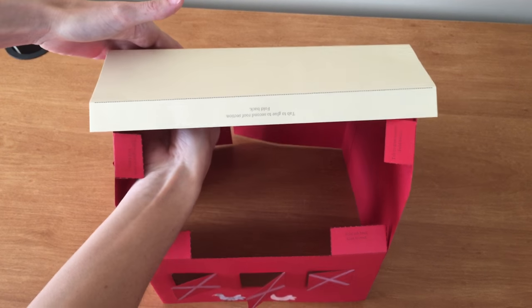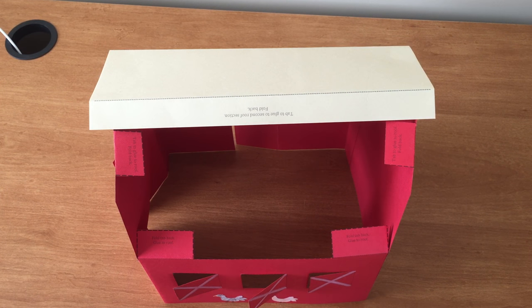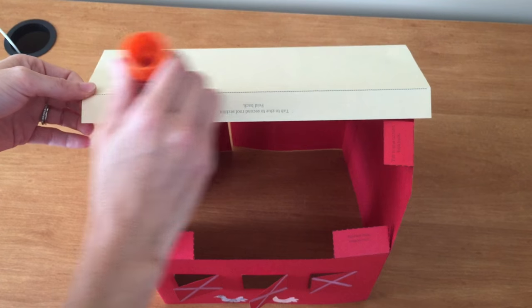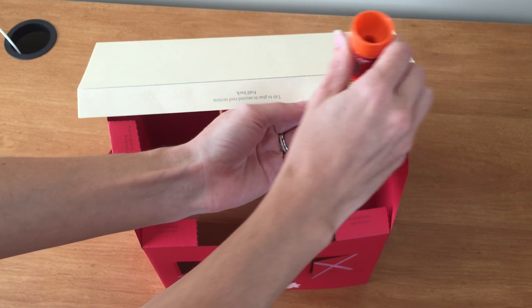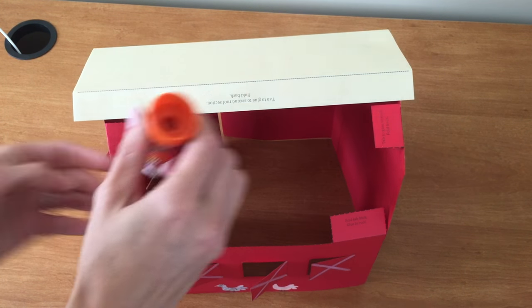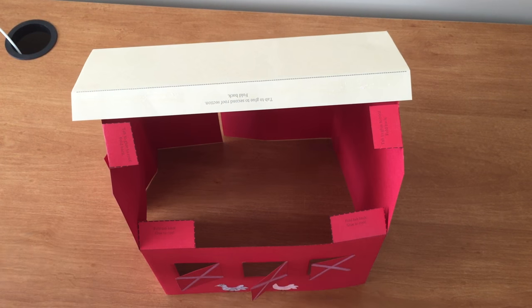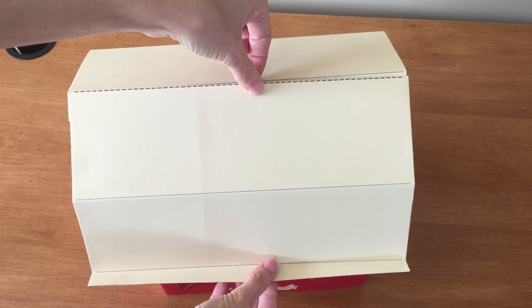Just like that. Then go ahead and add your glue here and to all four tabs so that you can press this piece of the roof on like so.